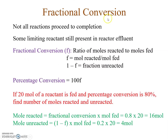We had left with fractional conversion, where I told you that not all reactions go to completion. So even if you have a limiting reactant, it will not be reacted completely and some amount of it will still be present in the reactor effluent. We define a term known as fractional conversion, which is the ratio of moles reacted to moles fed, denoted by f. The fraction unreacted is 1 minus f, and percentage conversion is given by 100f.